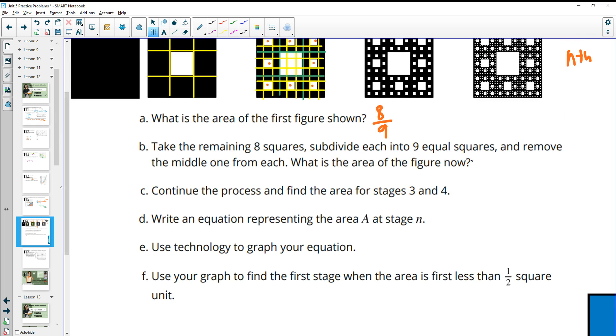So take the remaining squares, subdivide it, remove the middle, what's the area of this one? And that was this second figure, and that was 64 out of 81. And then continue the process for stages 3 and 4. That's going to be 8 to the third, which is 512 over 9 cubed, which is 729.